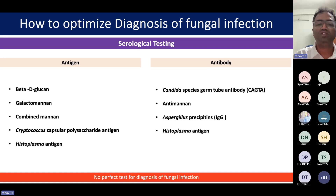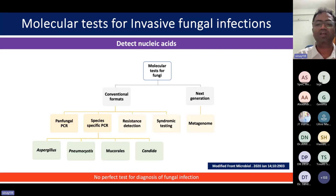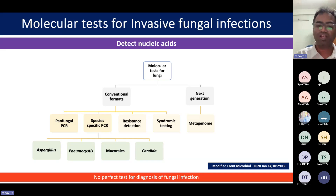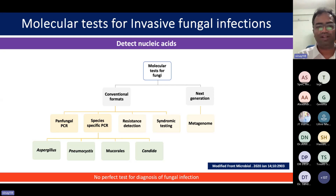Antibody tests include CAGTA, anti-mannan, aspergillus precipitins, and histoplasma. In molecular testing, we have conventional formats detecting all fungi via panfungal PCR or species-specific PCR. Molecular testing can also detect resistance and be part of syndromic testing. Next-generation sequencing can help identify fungal infections earlier than conventional methods, and my colleague will discuss these details further.